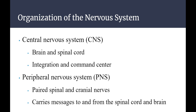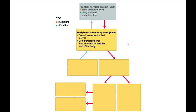Think of it like in the skeletal system where we talked about the axial and appendicular skeletal systems — it doesn't line up exactly, but it helps you think of the scale of the breakdown. We'll keep coming back to this table. The central nervous system — the brain and spinal cord — has integrative and control centers, and it communicates with the peripheral nervous system in both directions.